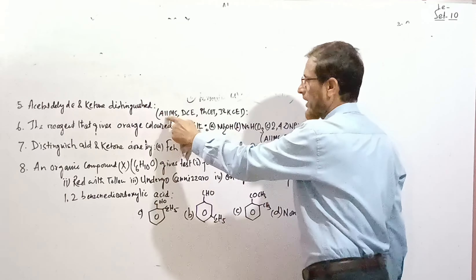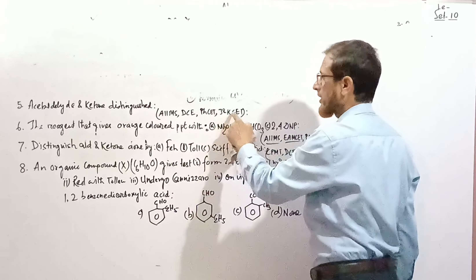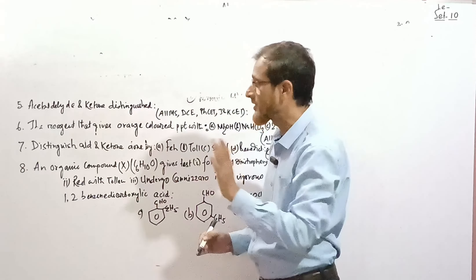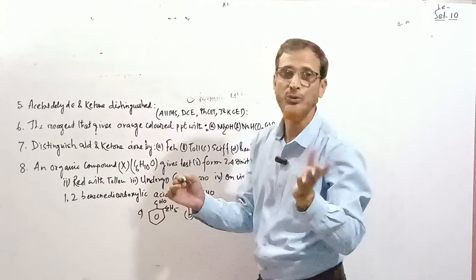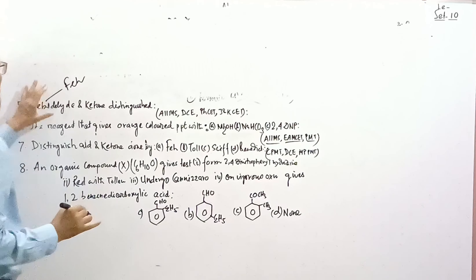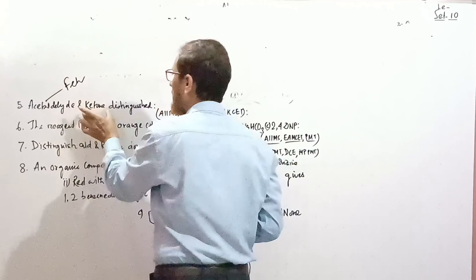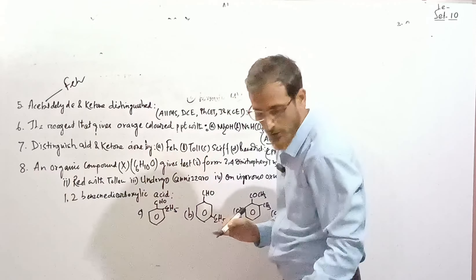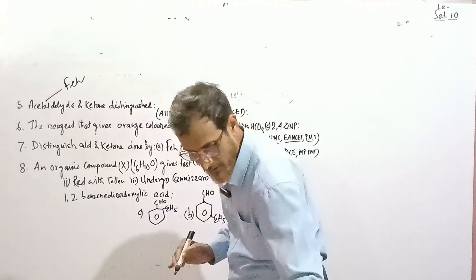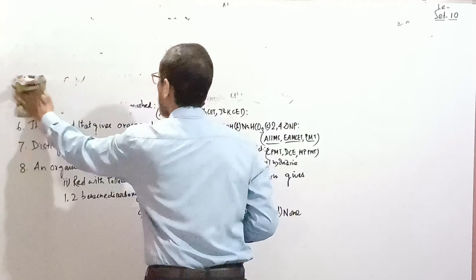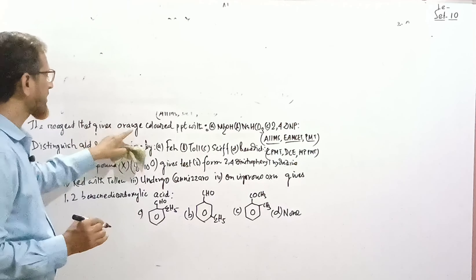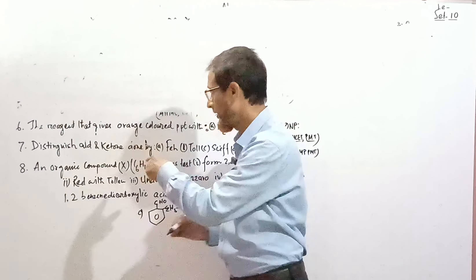Question: How can acetaldehyde and a ketone be distinguished? With Fehling reagent: acetaldehyde (an aldehyde) will respond to Fehling solution, giving a brick-red precipitate (Cu₂O). Ketones do not respond to Fehling solution. So Fehling reagent can be used to distinguish acetaldehyde from a ketone. Asked in AMC, DCE, PCAT, and KCET.